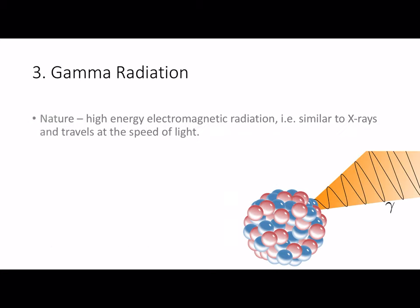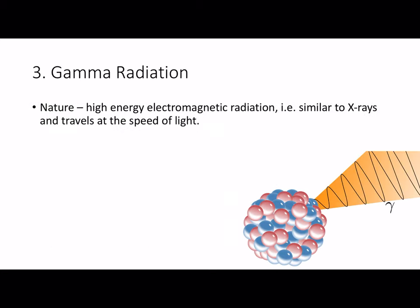Gamma radiation is very different. It's high energy electromagnetic radiation. It's similar to x-rays and travels at the speed of light. It has extremely high penetrating power and as a result of this you would need to place a thick slab of lead around it to stop it from penetrating the body.